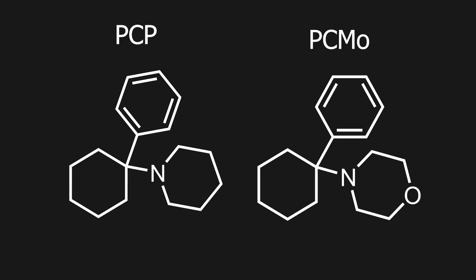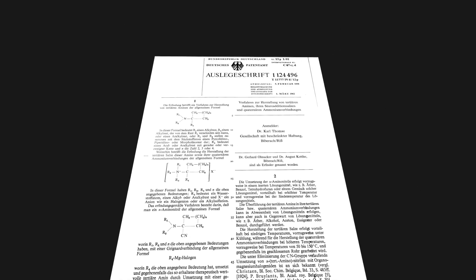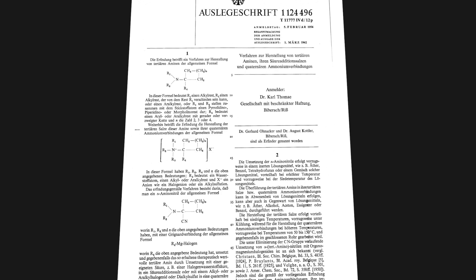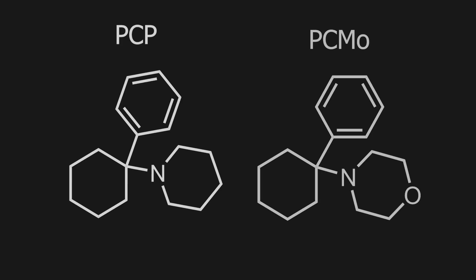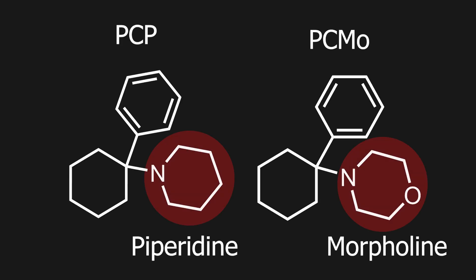PCMO, a derivative of PCP that I will be making today, was first mentioned in a patent in 1954 and actually precedes the rediscovery of PCP in 1956. PCMO differs from PCP only in the substitution with morpholine instead of piperidine.